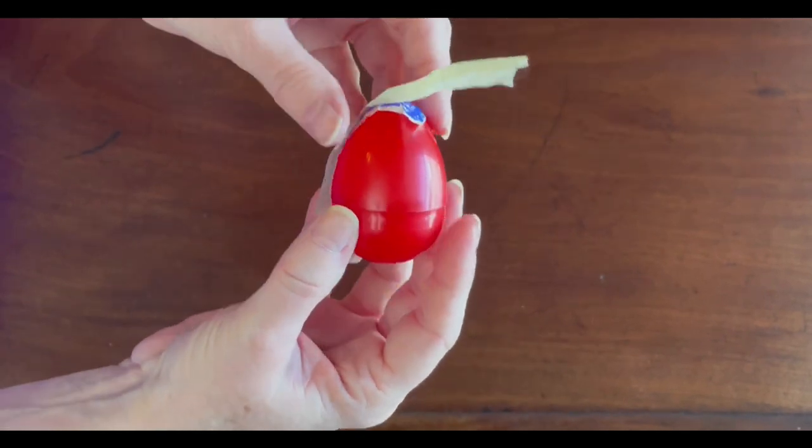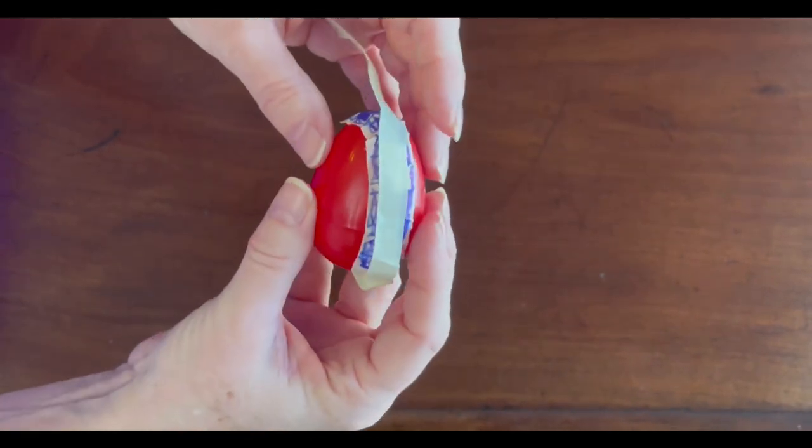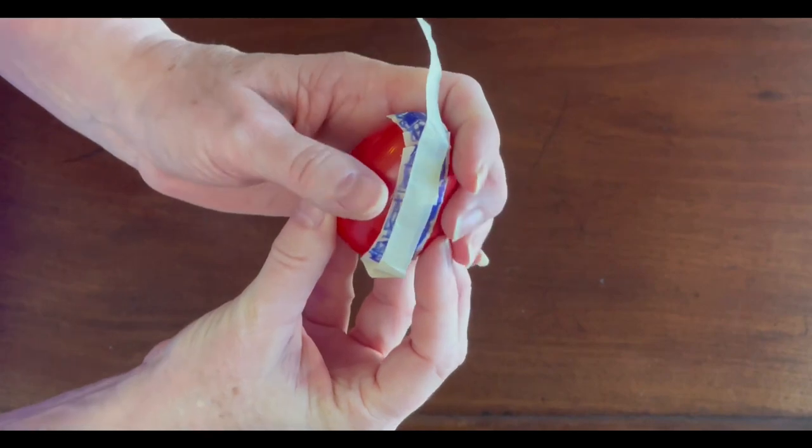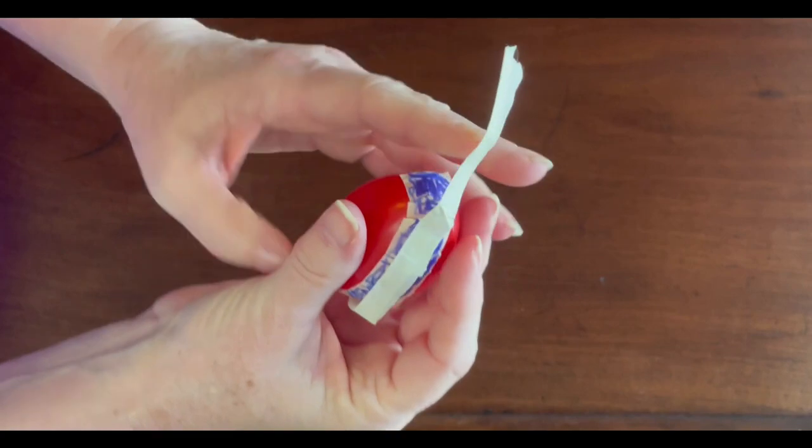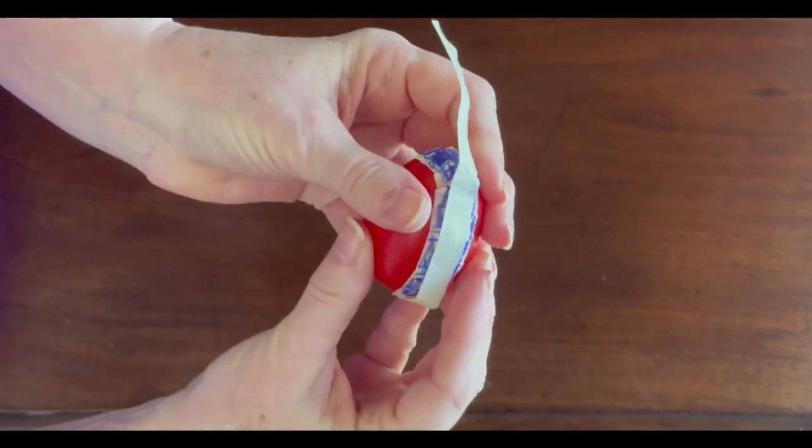So in normal testicular anatomy, the tunica vaginalis attaches firmly to each end of the epididymis, and it's a firm capsule. There's no way the testis can rotate.